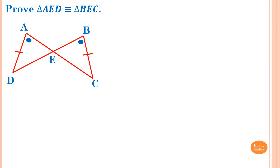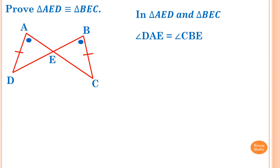For example, prove triangle AED is congruent to triangle BEC. Step one: write 'In triangle AED and triangle BEC.' Then write all the known facts. Angle DAE is equal to angle CBD — reason: given, because the same dot symbols indicate the angles are equal.